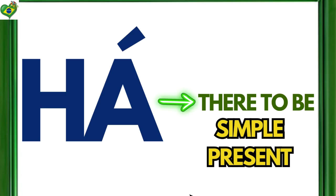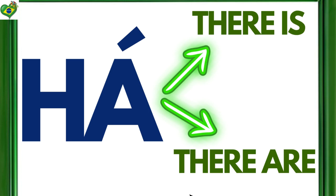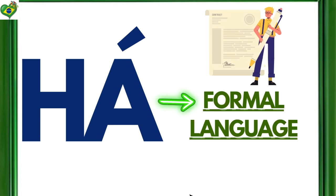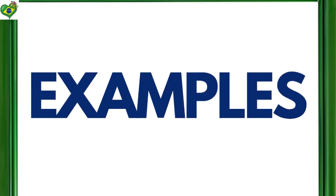The term 'Há' in Portuguese corresponds to the verb 'to be' affirmative in the simple present. In other words, 'Há' corresponds to 'there is' and 'there are'. 'Há' is practically not used in everyday speech, but is widely used in formal speech and in writing. Examples.